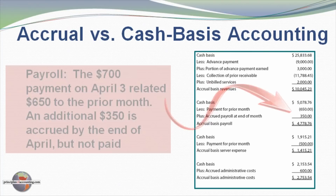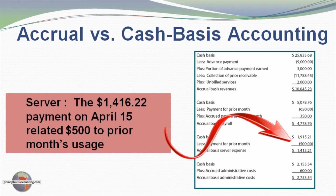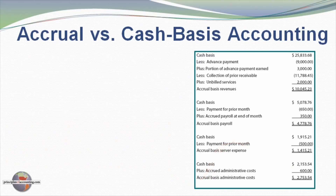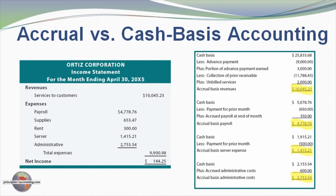Expenses also involve adjustments. Cash basis payroll expense is just over $5,000. We subtract $650 paid this month that related to prior-month work, and add $350 for work performed this month but not yet paid, giving accrual basis payroll of just over $4,700. For the server cost of $1,416, we subtract $500 relating to the prior month. For administrative costs, we add $600 for costs incurred but not yet paid. This completes the conversion from cash basis to accrual basis, and the accrual basis income statement shows we only made $144 for the month.